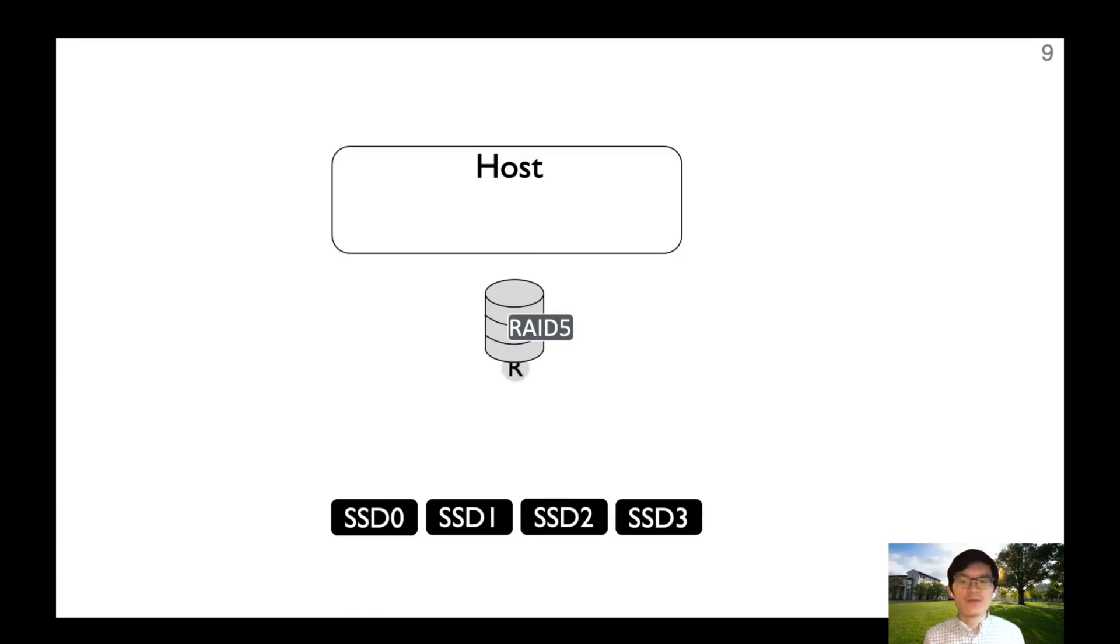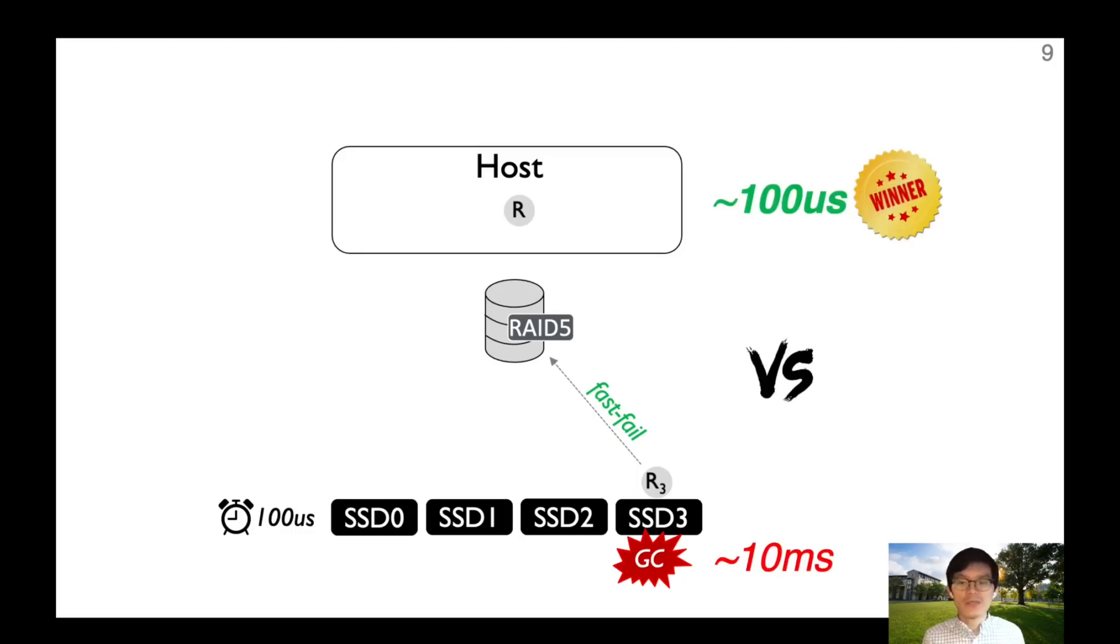Let's see how it works in the RAID setup. We submit full-stripe reads. Now, SSD3 is busy with GC. It will quickly fast-fail the sub-IO. When the host receives the fast-fail signal, it will proactively send an extra read to the parity SSD. If the first two SSDs and the parity SSD are not busy, then after about 100 microseconds, these three sub-IOs will normally return. With this, we can reconstruct the data of the sub-IO R3 with XOR operations. After that, the user-level read can be safely deemed as completed. This approach has a large performance gain with very small overhead.